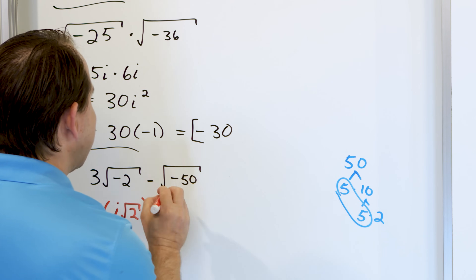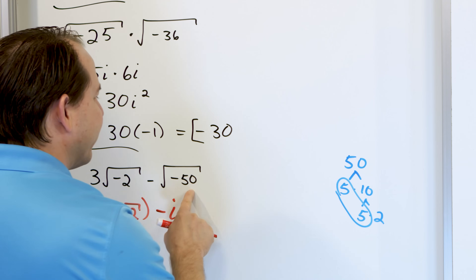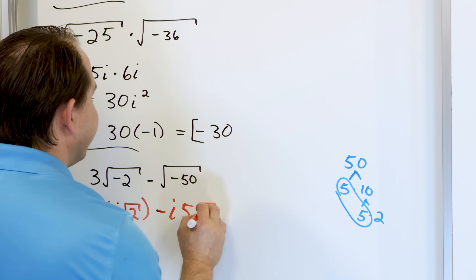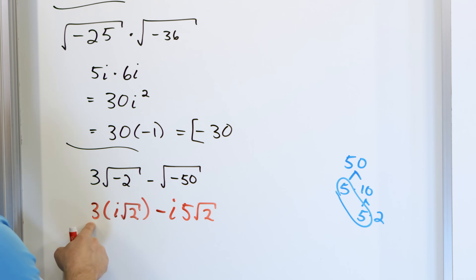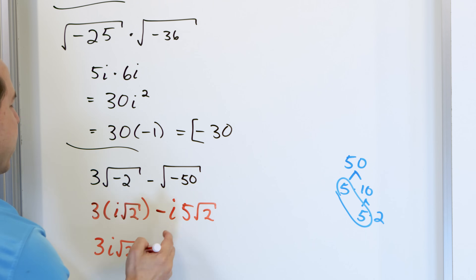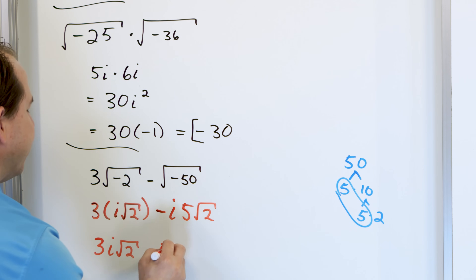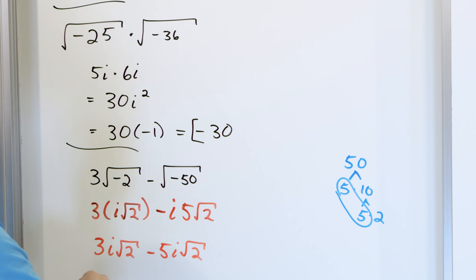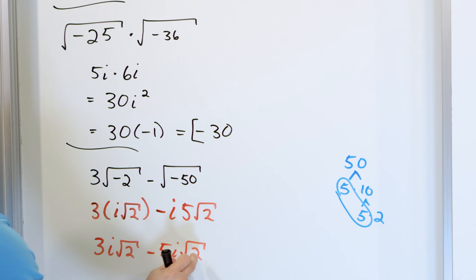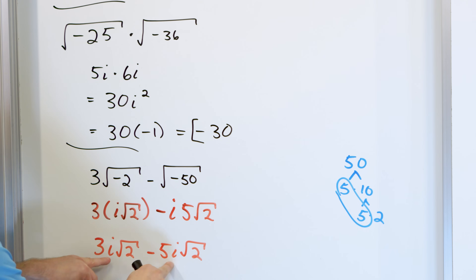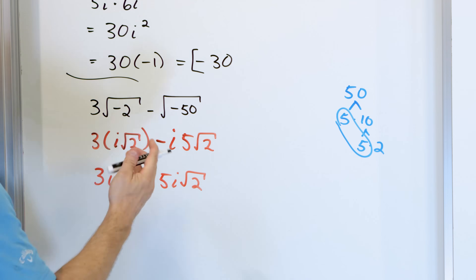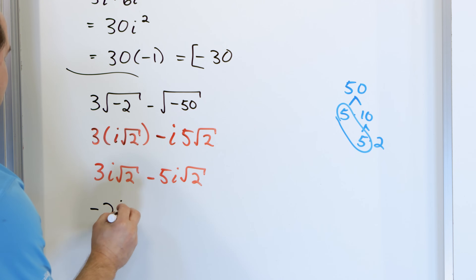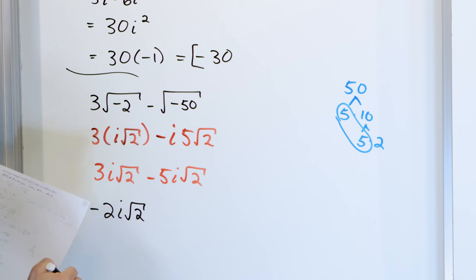The square root of negative 50 gives an i from the square root of negative 1, and the square root of 50 is 5 times the square root of 2. So we have 3 times i times root 2, written as 3i√2, minus 5i√2. We can only add or subtract radicals when they're exactly the same — they match here — and both terms have an i. So what is 3 minus 5? That's negative 2. The final answer is negative 2i times the square root of 2.